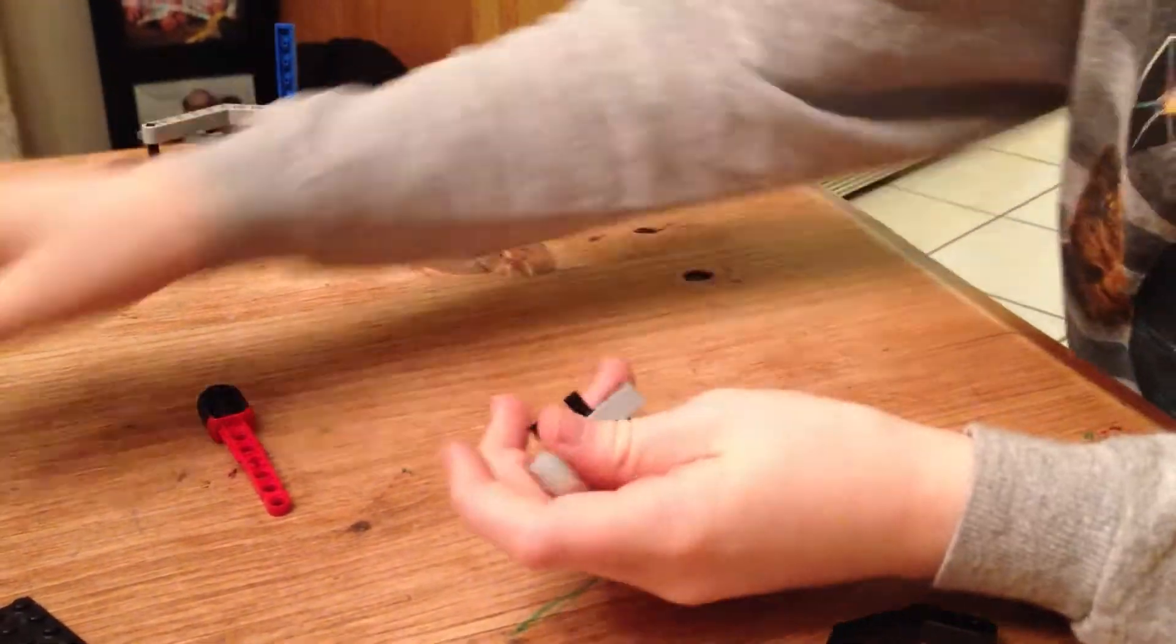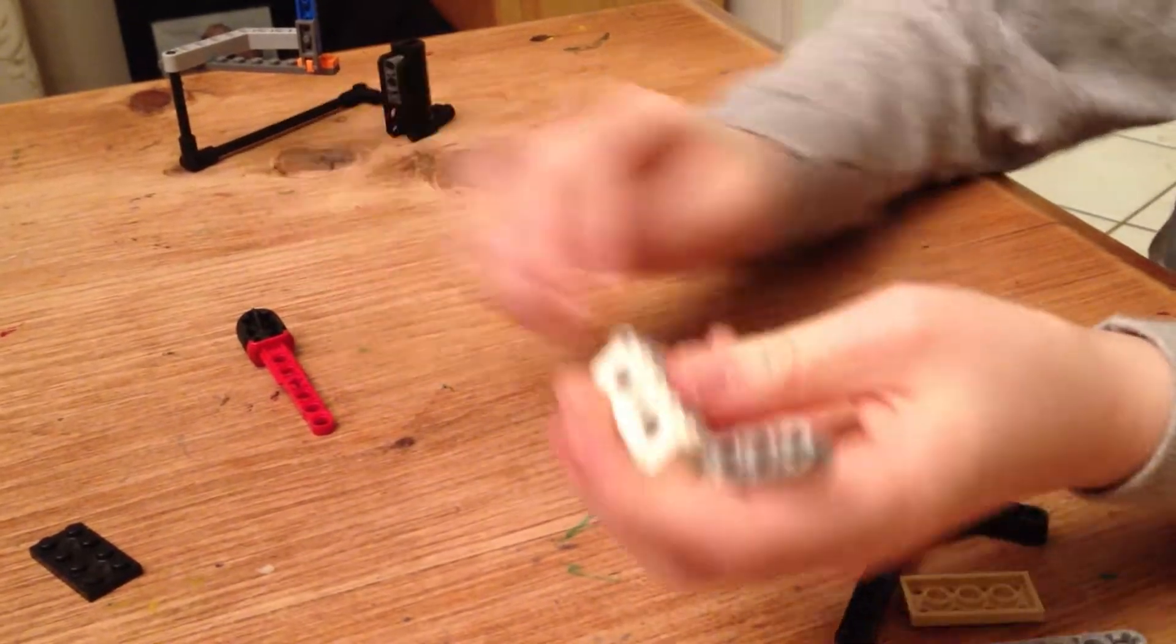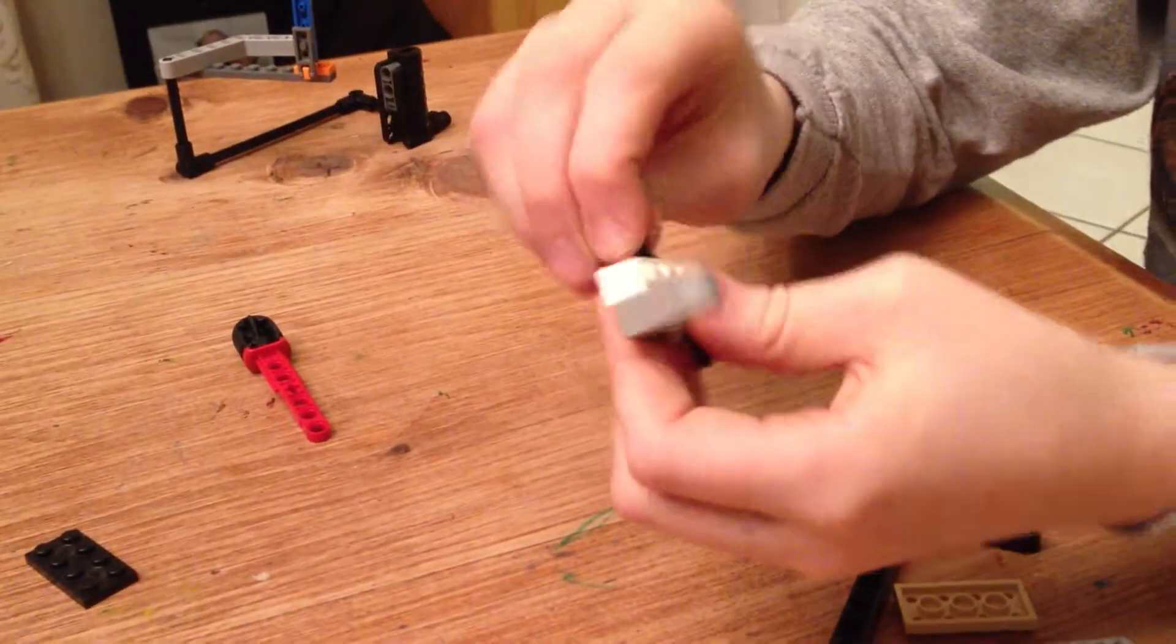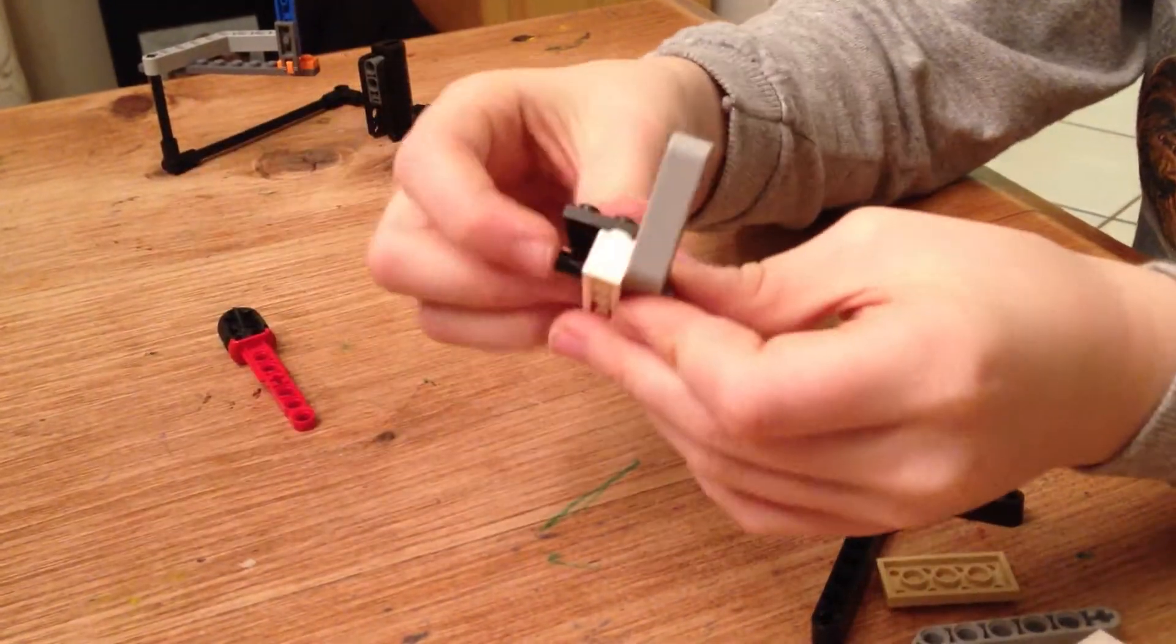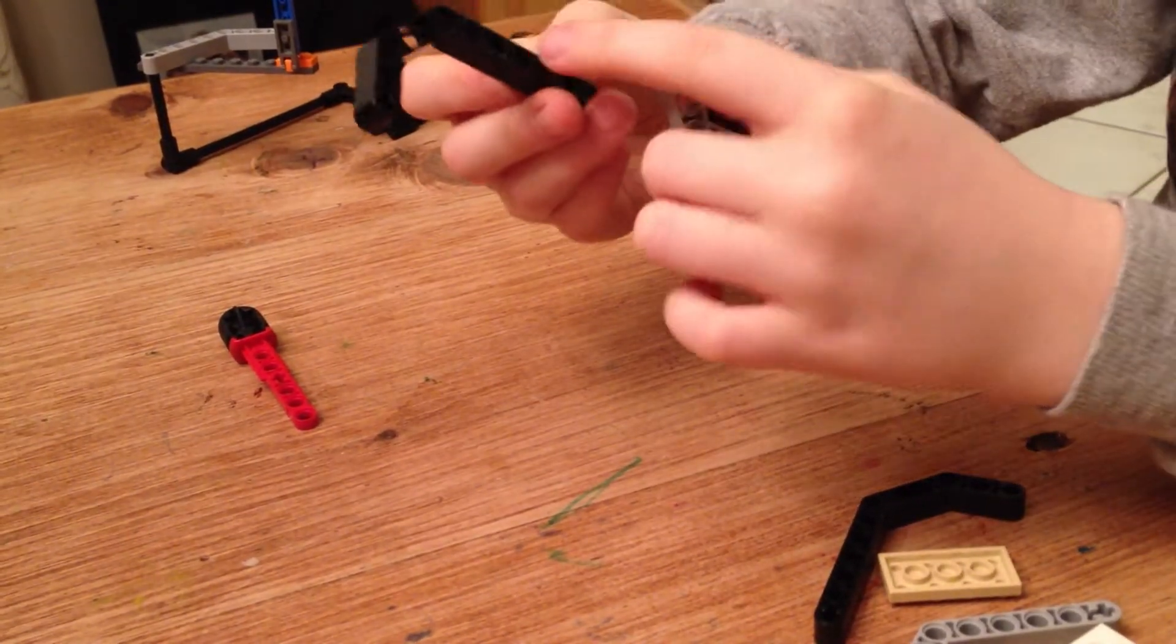And then you're going to do it on the back ones. Place one of these, then on that you're going to place another one. Place a tile over it and two from the back.